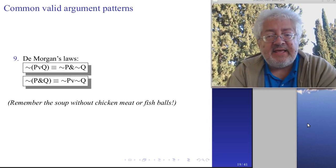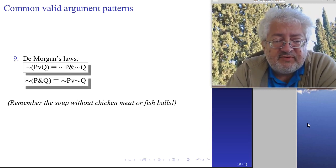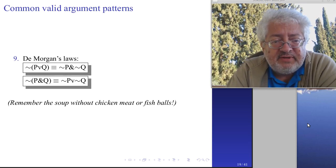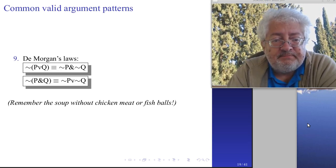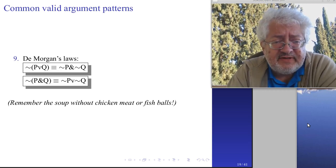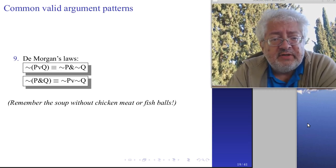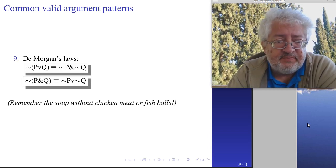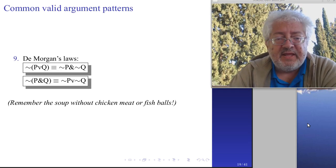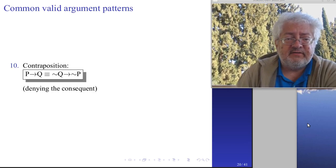Then we have De Morgan's laws, which we talked about previously - the thing about 'don't bring Peter and Mary' versus 'don't bring Peter or Mary.' These equivalences transform negations over conjunctions and disjunctions.